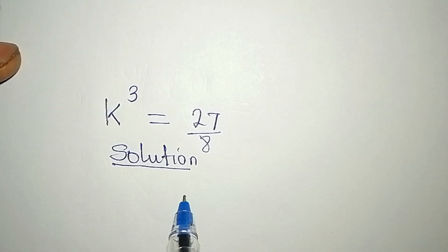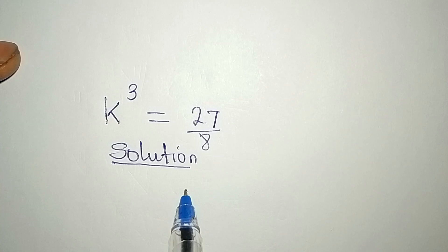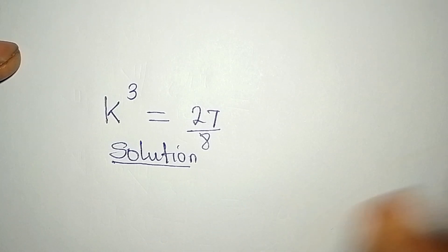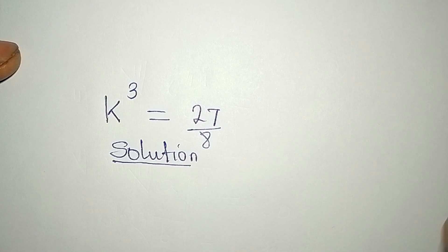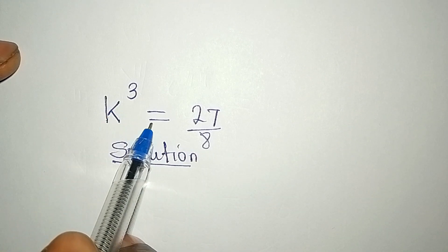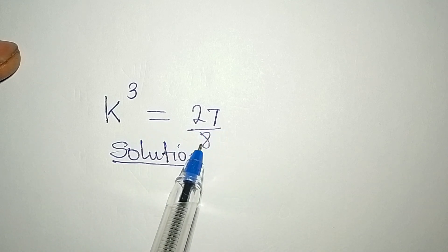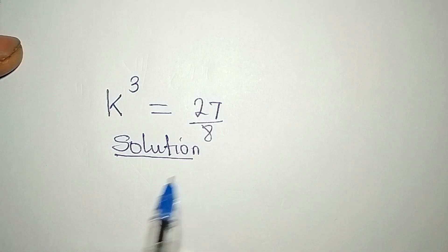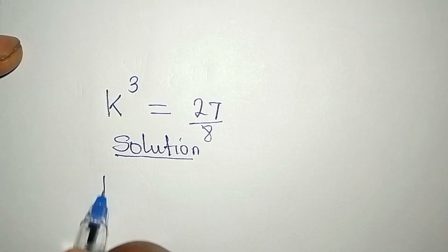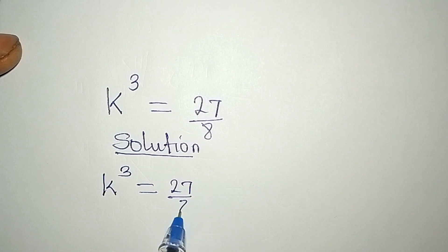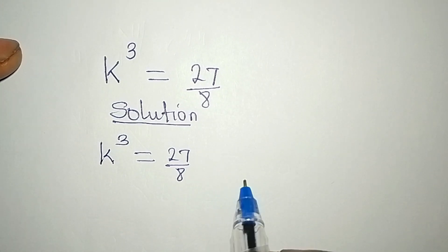Hello everyone, welcome to my channel. What we do here is provide detailed solutions to math problems. Before us we have k to the power of 3 equals 27 over 8, and we want to solve this in detail to provide the three solutions.